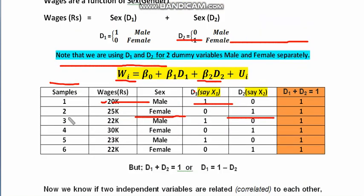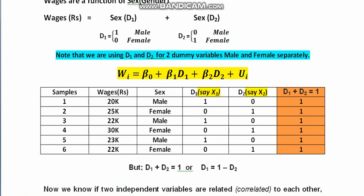Looking at the data collected from individuals — their wages and gender — for the first sample, if the person is male, D1 equals 1 for male, so I put 1 here. For the second sample, a female, D1 equals 0, so I put 0. In this way, I enter values for D1 using the notation of 1 and 0 across all samples.